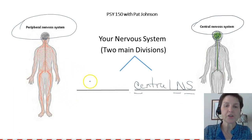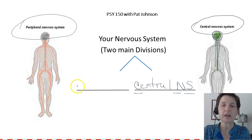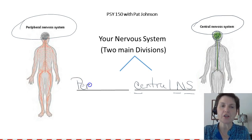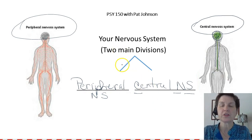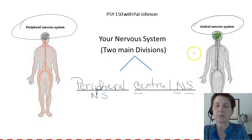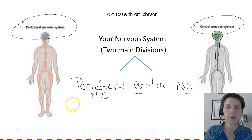On the other side, the other division of our nervous system is the peripheral nervous system, abbreviated PNS. Peripheral means edges. Everything that's not central nervous system is the peripheral nervous system — all these nerves going out to our limbs and to our organs.